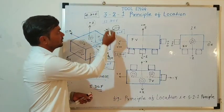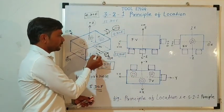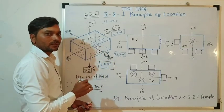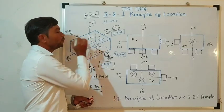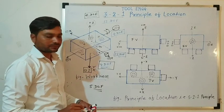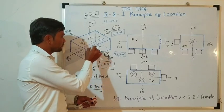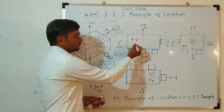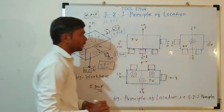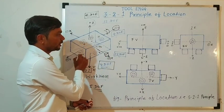Let us discuss the 3-2-1 principle. What is meant by 3-2-1? The '3' means in the bottom plane we have 3 pins — 1st, 2nd, and 3rd — which are supporting pins. In this plane we have 2 locating pins, and in this plane we have 1 locating pin. Here is the front view of the diagram, this is the top view, and this is the side view. In the bottom plane we have 3 locating pins.